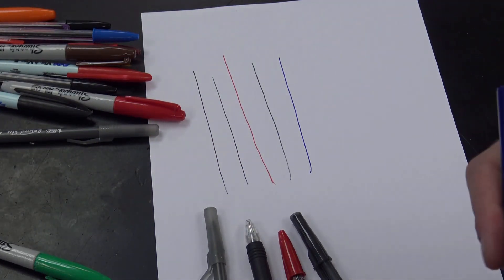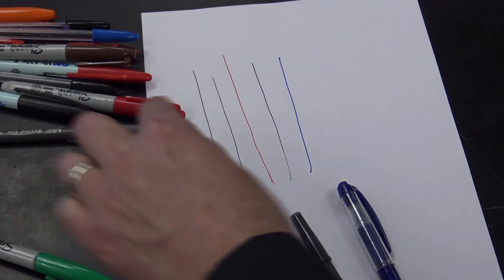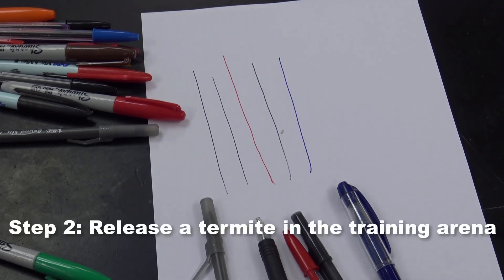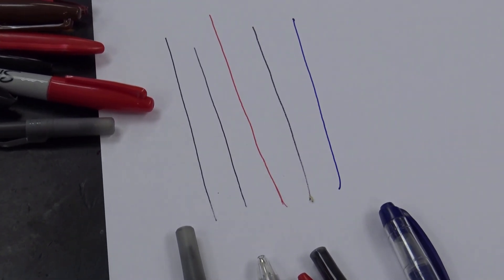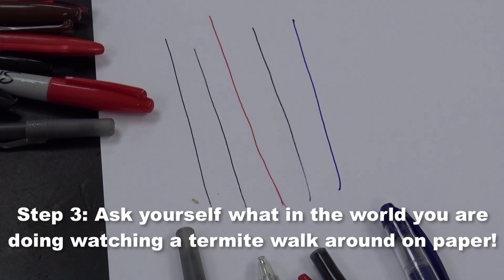Really just to see what'll happen, because in science we don't always know. So I take my termite and put it on the paper. This is what they said would happen... Wait a minute, I thought my termite was supposed to follow that pen line. Maybe this experiment doesn't work out quite as well as I thought.